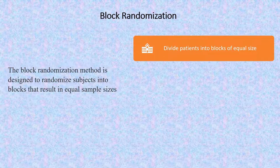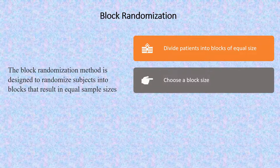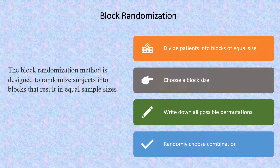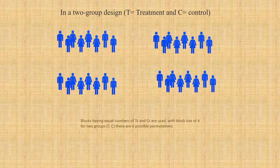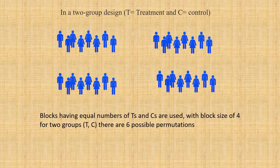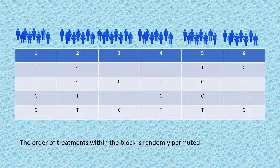The block randomization method is designed to randomize subjects into blocks that result in equal sample sizes. The system divides patients into blocks of equal sizes. A block is chosen, all possible permutations are written down, and any combination is randomly chosen. In a two-group design with a treatment and control group, blocks having equal numbers of treatment and control assignments are used. With a block size of 4 for two groups, there are six possible permutations. The order of treatments within the block is randomly permuted. This type of randomization is used for small studies to maintain reasonably good balance among groups.